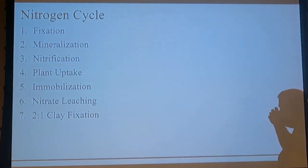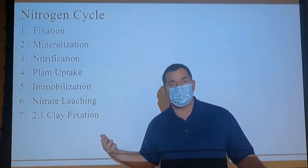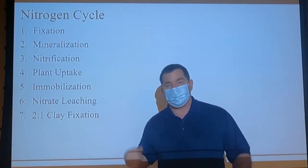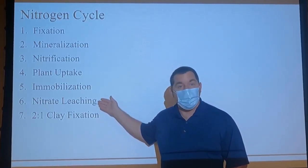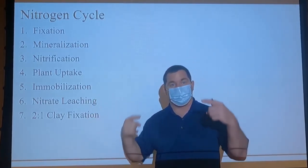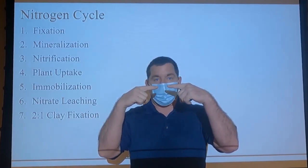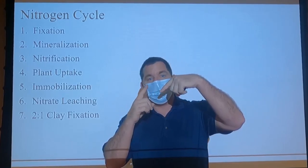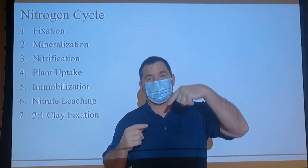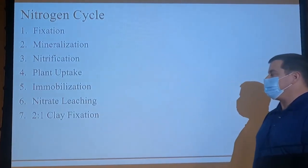Next, nitrate can be leached because the overall net charge on soils is negative. Nitrate is an anion — it has a negative charge — and two negatives do not attract each other. So because the net charge is negative, the nitrate is not adsorbed to the soil colloids and it has a greater potential to leach.